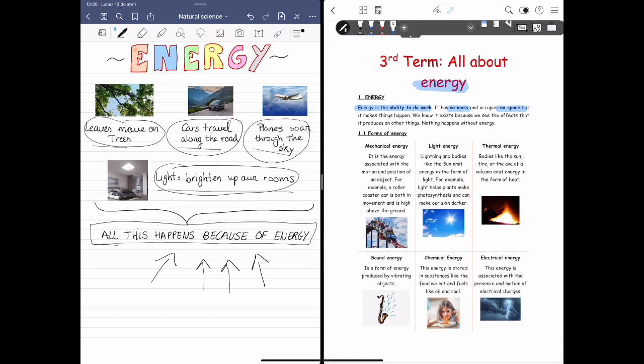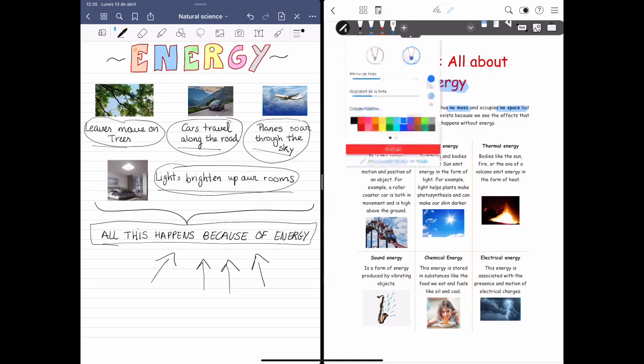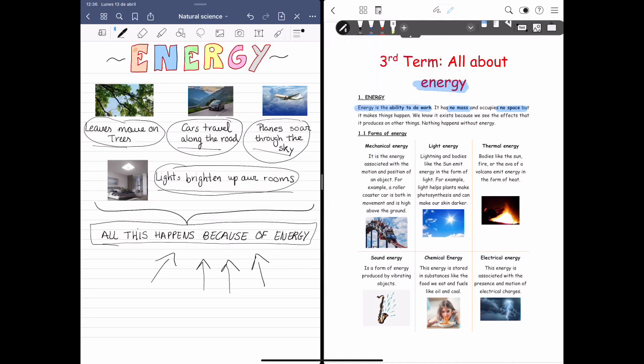Now, let's analyze the different forms of energy. First of all, I'm going to change the color. We've got mechanical energy, then light energy, thermal energy, sound energy, chemical energy, and electrical energy. Let's analyze each of them.